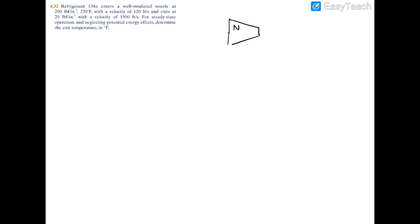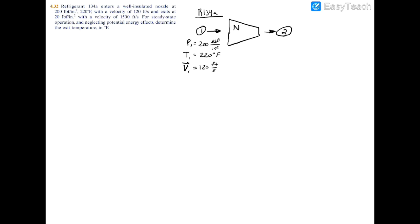Let's begin by drawing our schematic. We'll have a nozzle going from a larger area to a smaller area. The working fluid is R134a. We'll call the inlet area one and the exit area two. At the inlet: pressure P1 is 200 psi, temperature T1 is 220°F, and velocity V1 is 120 feet per second. At the exit: pressure P2 is 20 psi and velocity V2 is 1500 feet per second.